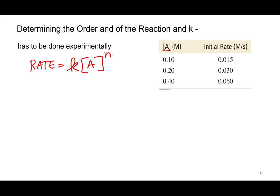First we're going to find the rate order experimentally — just like you did in lab. You change the concentration, measure the rate each time, and see what happens. After we find the rate order we can calculate the rate constant, so we're solving for both of those in the rate law. We're going to compare two trials. I highlighted the first and second — you could use the second and third or first and third — you're just comparing results from two trials.